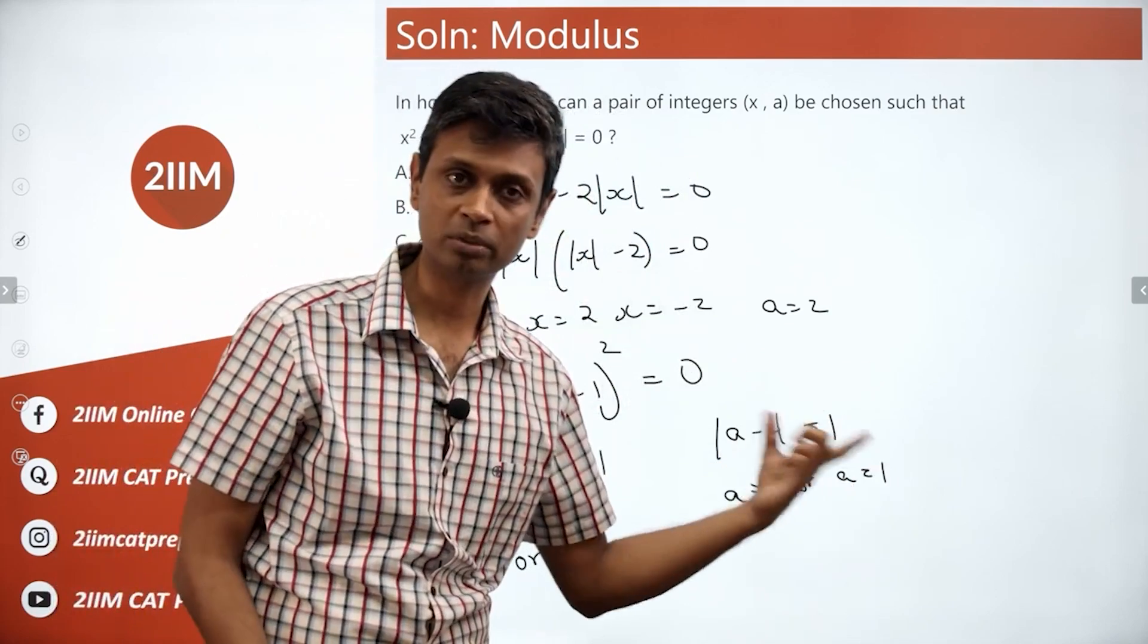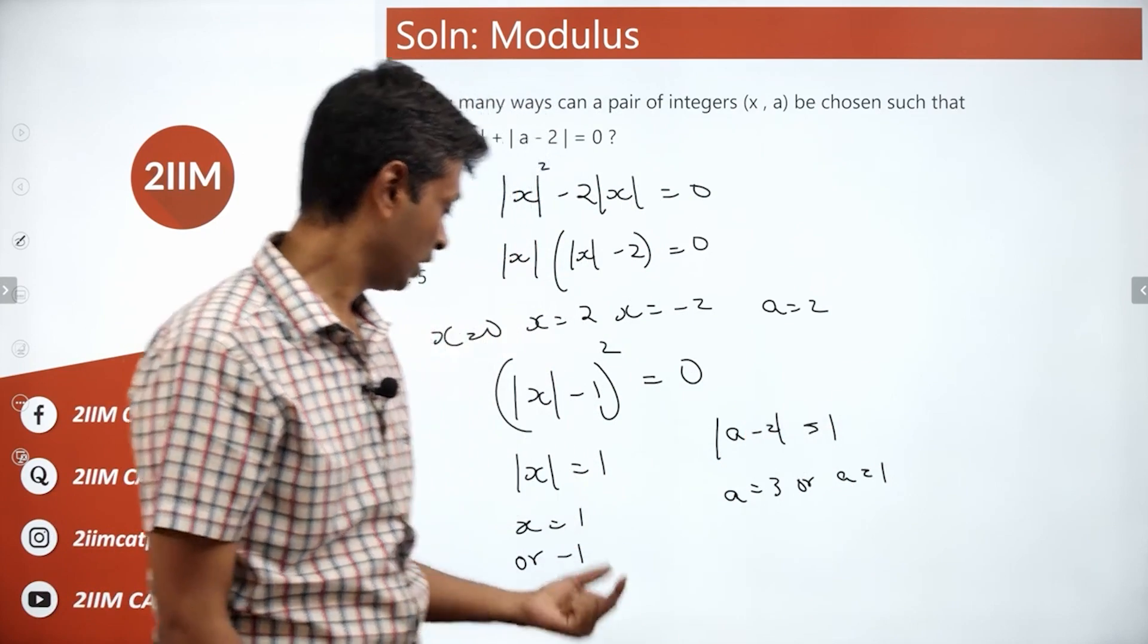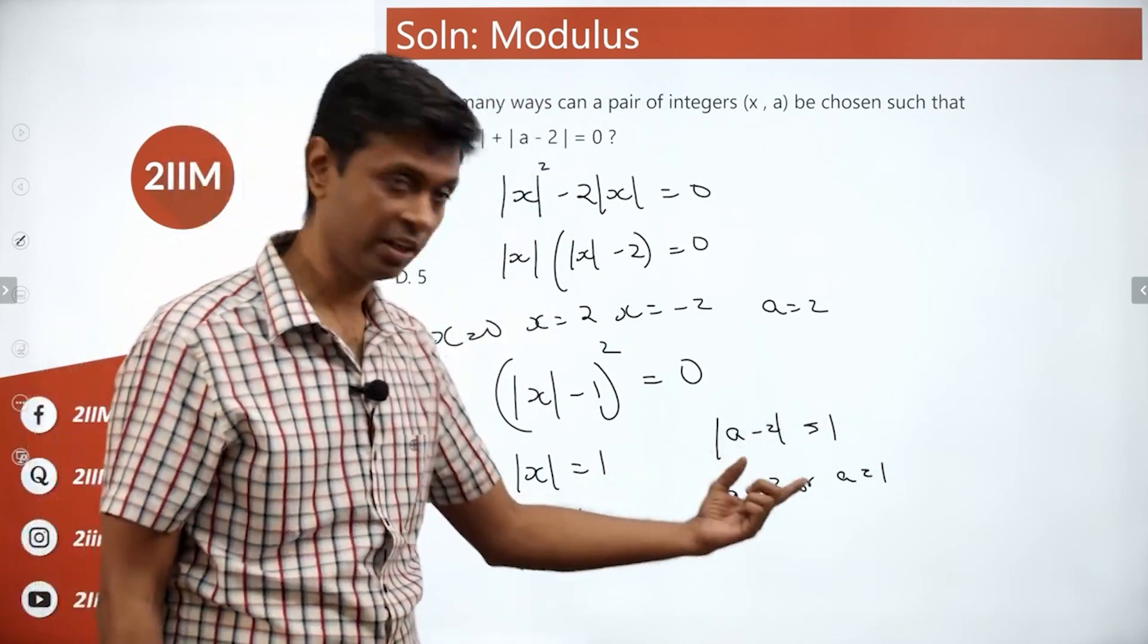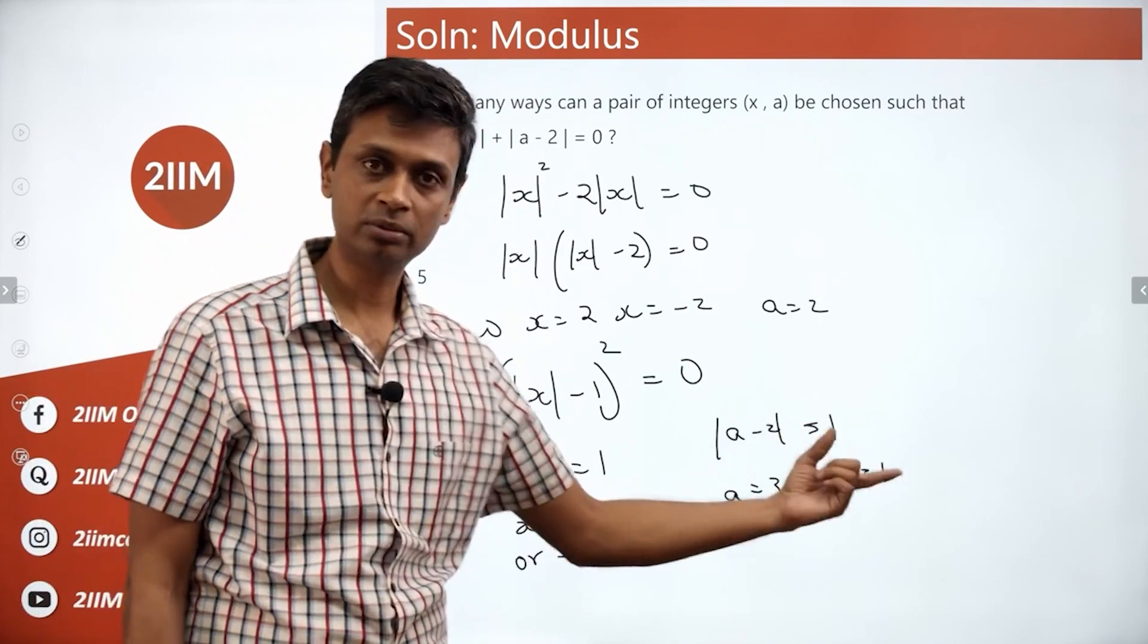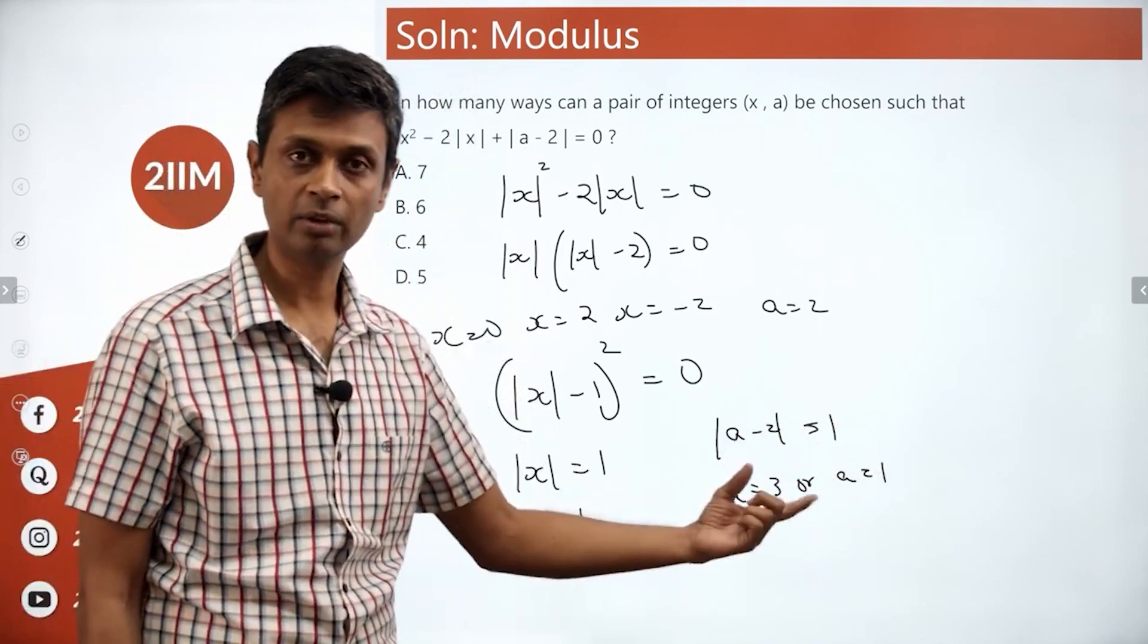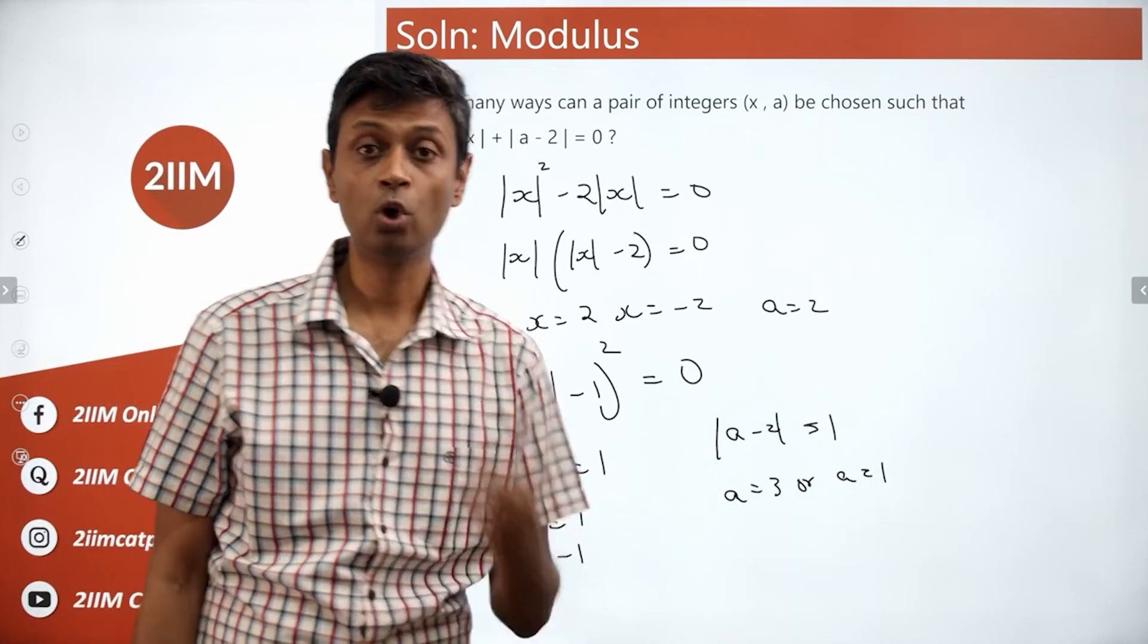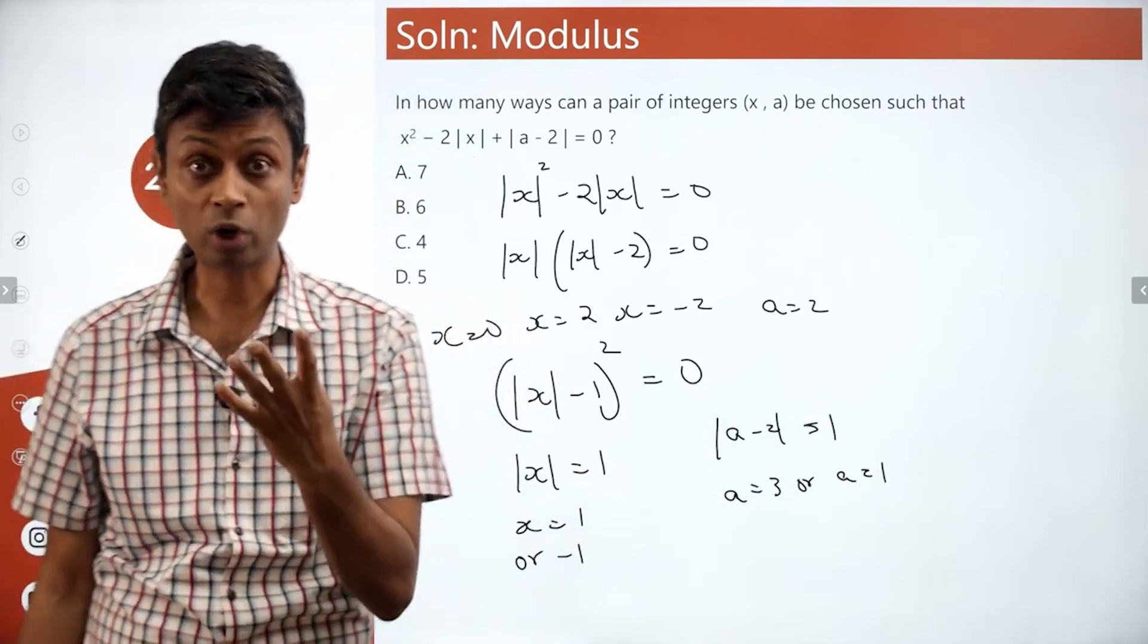A minus 2 is 1 or a minus 2 is minus 1. Both are possible. Now it could be x is 1, a is 3; x is 1, a is 1; or x is minus 1, a is 3; x is minus 1, a is 1. Four possibilities exist, all four are possible.